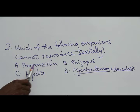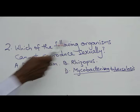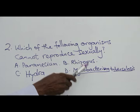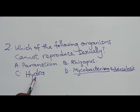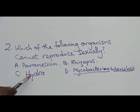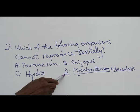Paramecium conjugates and can also carry out binary fission, so it can reproduce sexually. Rhizopus produces spores and at the same time conjugates, therefore it can reproduce sexually. Hydra has both ovary and testes — it is hermaphrodite — so it can reproduce sexually, and at the same time it can also reproduce through budding. But D represents bacteria — a bacterium — and all bacteria reproduce by binary fission. So our answer to question 2 is D; it cannot reproduce sexually.